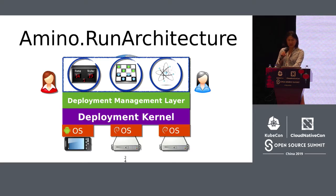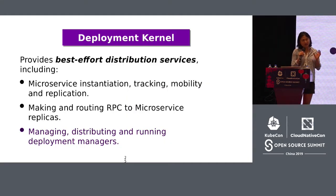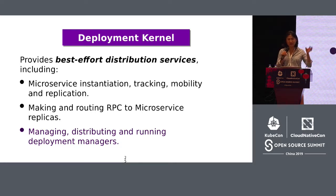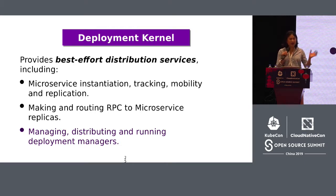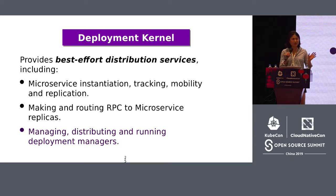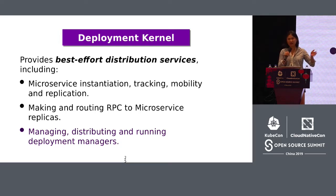Looking down into the deployment kernel: it is a piece of software that is distributed but runs on every single cloud server and mobile device. Its entire job is to instantiate and manage the high-level microservices that comprise Amino Run applications. It tracks where each microservice is, enables microservices to move around transparently to the application, and makes sure microservices can call each other transparently without having to look up IP addresses or set up TCP connections.